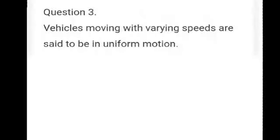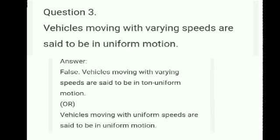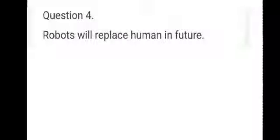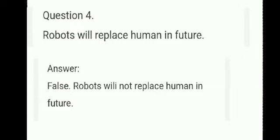Question number three: vehicles moving with varying speeds are said to be in uniform motion. Answer: false. Vehicles moving with varying speeds are said to be in non-uniform motion. Vehicles moving with uniform speeds are in uniform motion. Question number four: robots will replace women in future. Answer: false. Robots will not replace women in future.